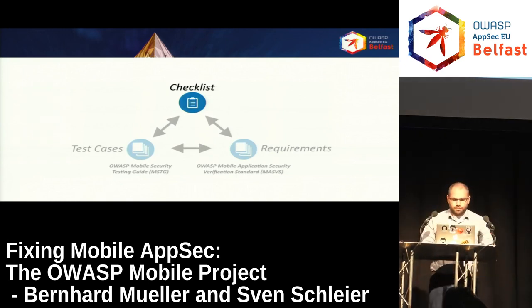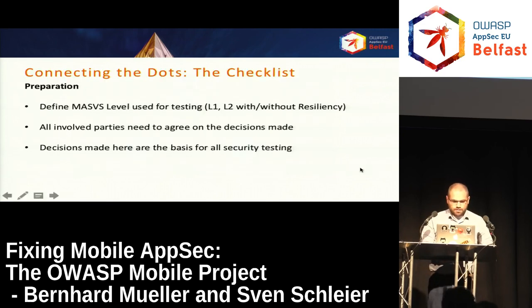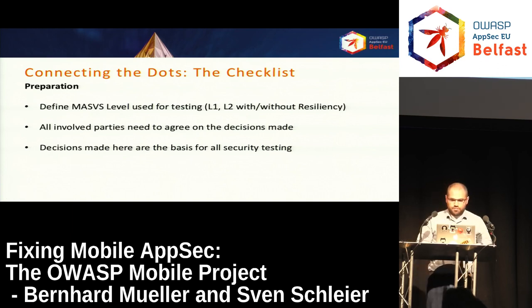To quickly recap: we have the MASVS giving high-level requirements for mobile application security, and the MSTG that outlines those requirements into technical details. What was missing was something for a tester to document results. So the preparation part — the most important part — is to first sit down ideally with the developers and some IT security folks from the enterprise, because for most people it's not clear what requirements are actually applicable to them, because nobody has told them.